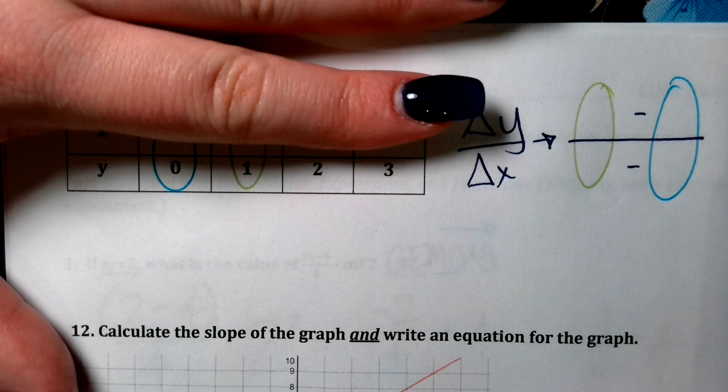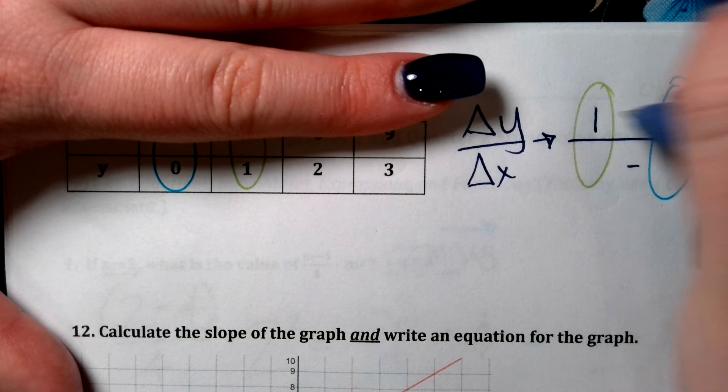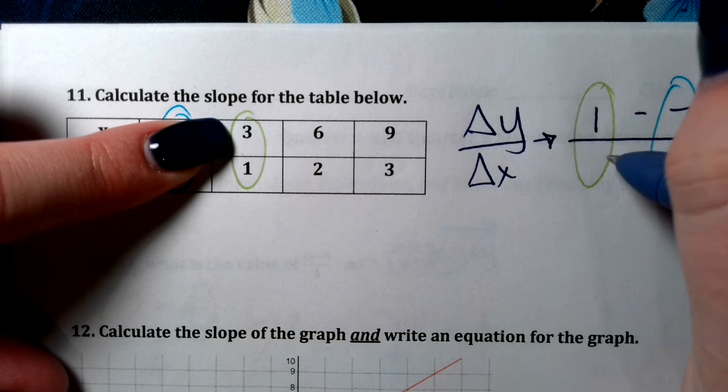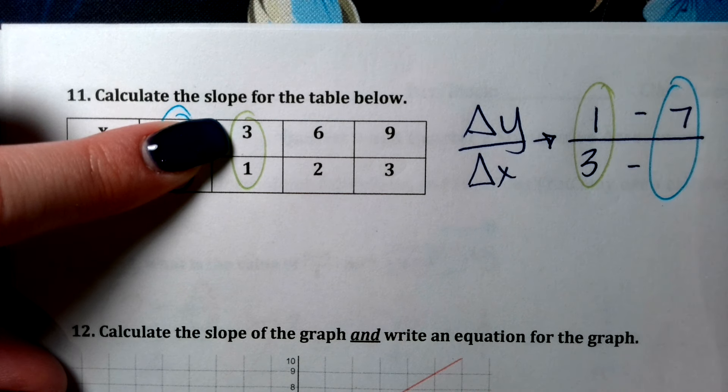So for mine, I'd rather have 1 minus 0. 1 was my first y, so 3 is my first x.